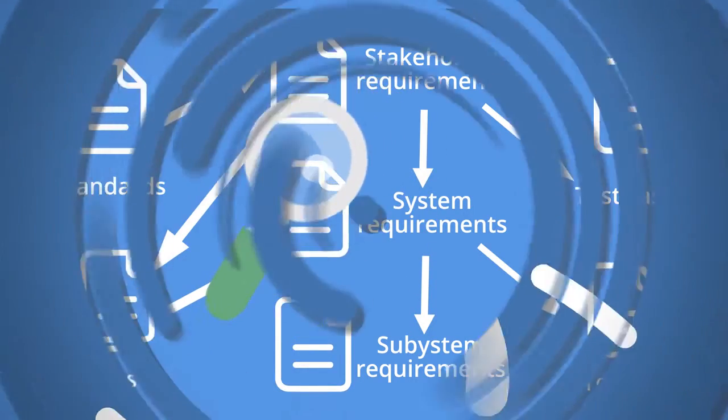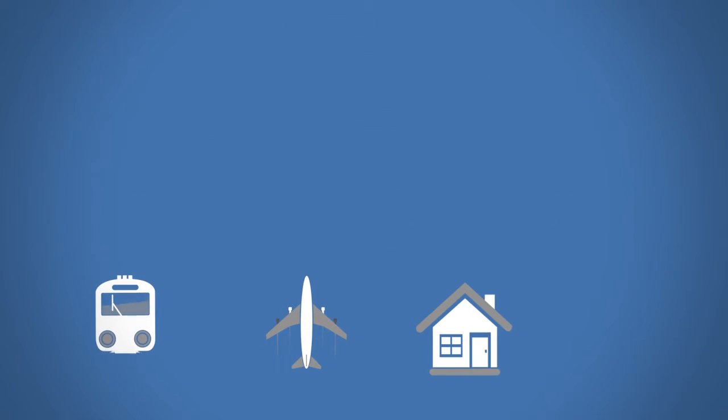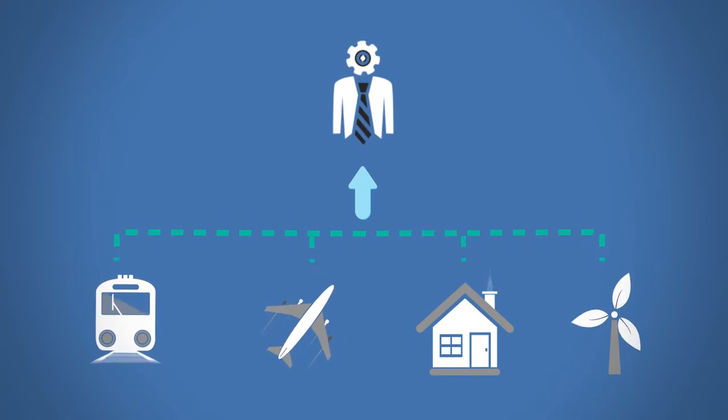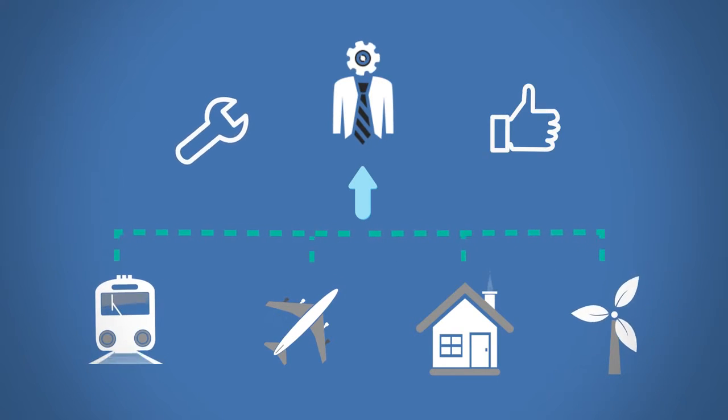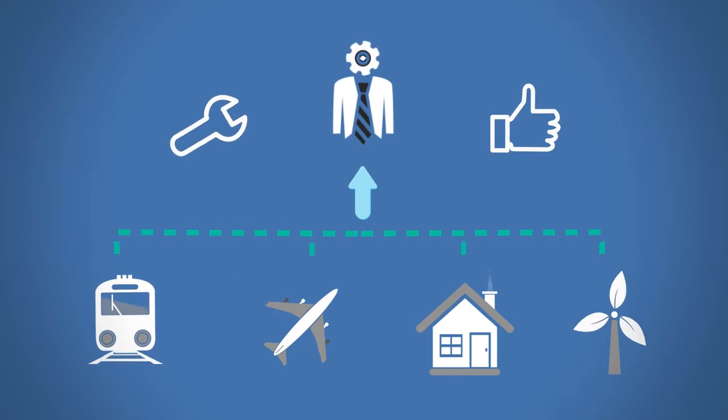The traceability extends beyond the requirements themselves. With the advent of the Internet of Things, operational data from connected devices in the field can feed back into engineering, including the original requirements. This digital thread helps to fix defects and improves the quality of future products.